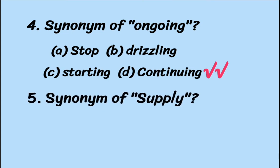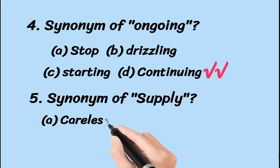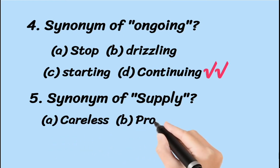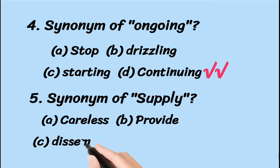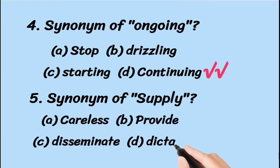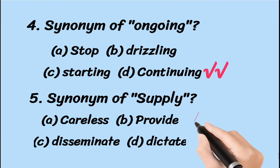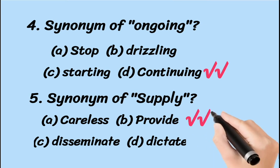The fifth synonym question: synonym of 'supply.' Options are: A — careless, B — provide, C — disseminate, D — dictate. The synonym of 'supply' is 'provide,' and both words take the preposition 'with.' So option B is correct.